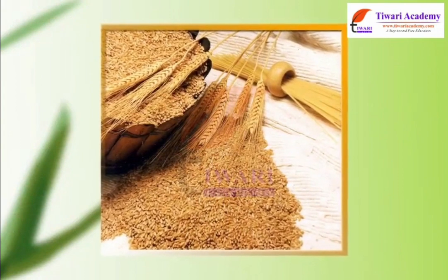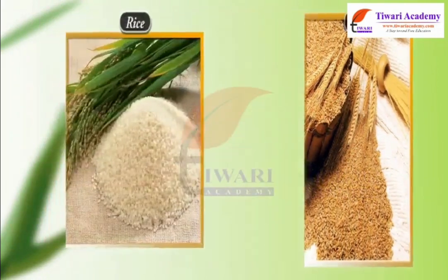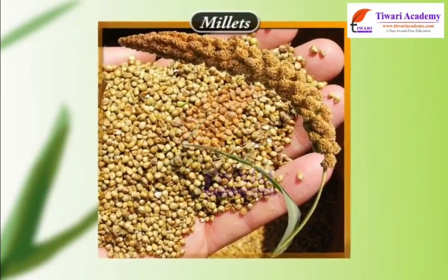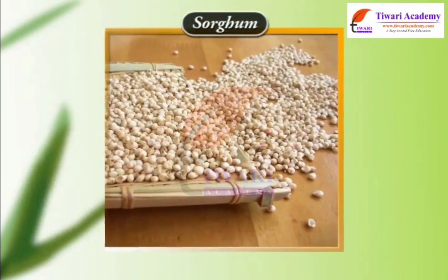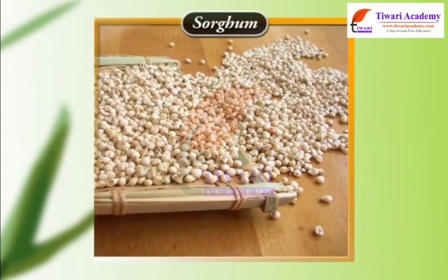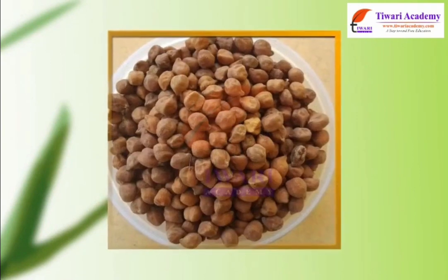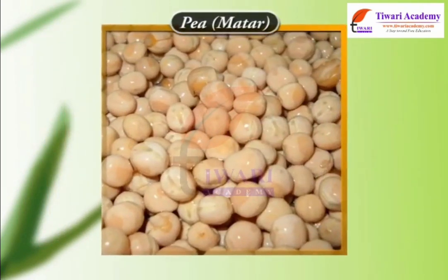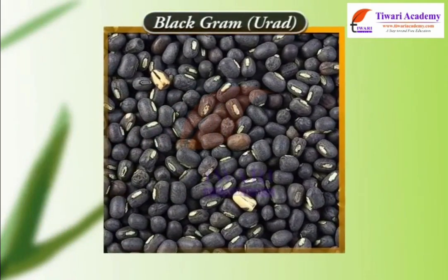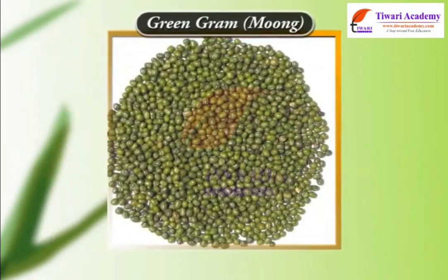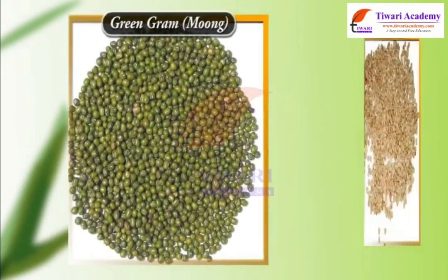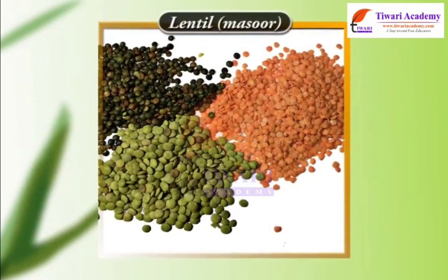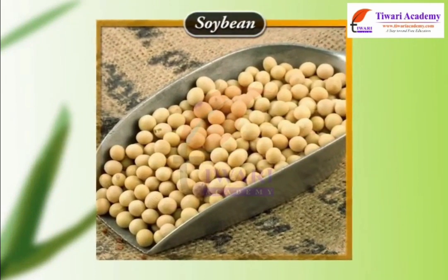We all know that cereals such as wheat, rice, maize, millet and sorghum provide us carbohydrate for energy requirement. Similarly, pulses like gram, chana, pea, matar, black gram, urad, green gram, moong, pigeon pea, arhar, lentil, masoor, and soybean provide us with protein.